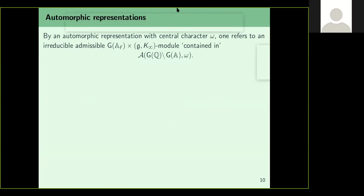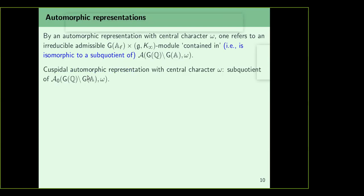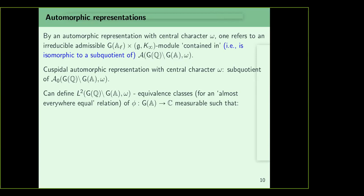An automorphic representation is an irreducible admissible G(A_F) × (g, K∞)-module which is isomorphic to a sub-quotient of the space of automorphic forms with central character ω. A cuspidal automorphic representation uses A₀(G(A)/G(Q)) instead of the full space A. There is also an L² version of these concepts.